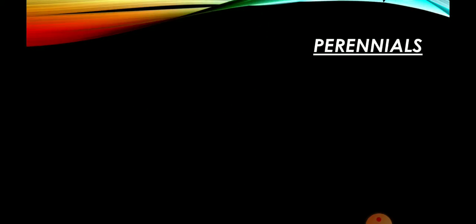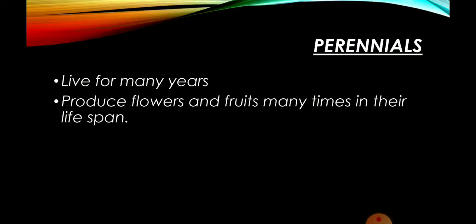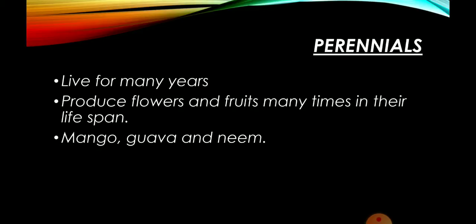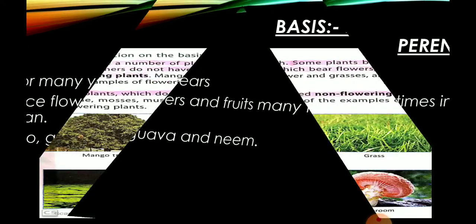Then perennials में हम आते हैं — perennials, they live for many years. Then they produce flowers and fruits many times in their lives. जैसे mango tree बन गया, अब वो हर गर्मी के season में आपको fruit देगा। So mango, guava, neem — ये सारे perennials हैं.